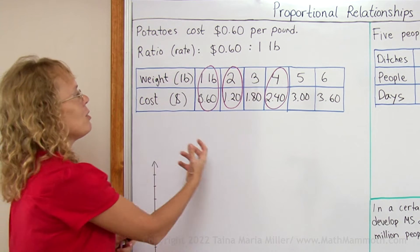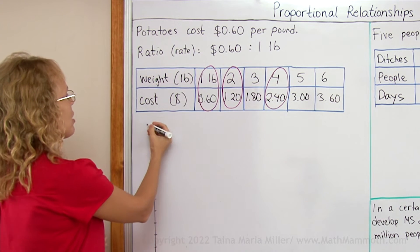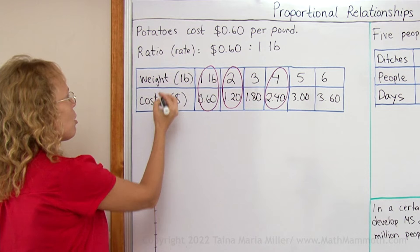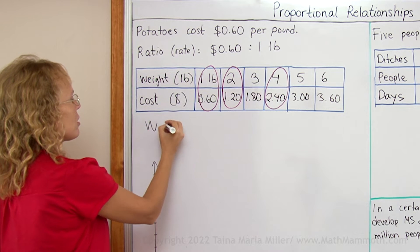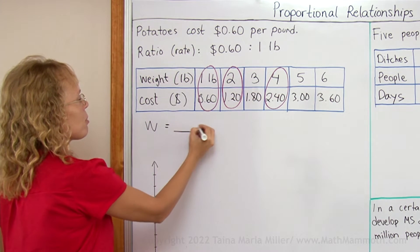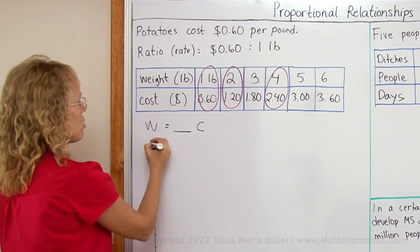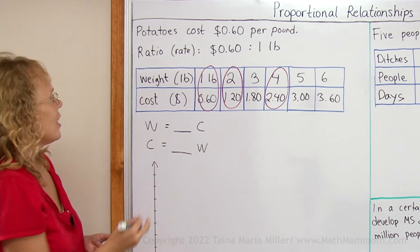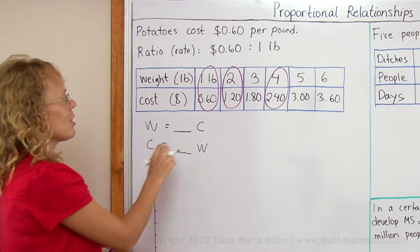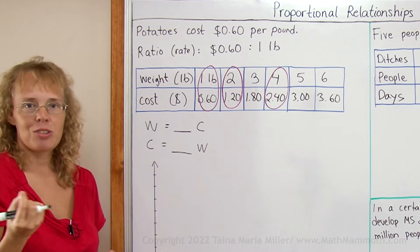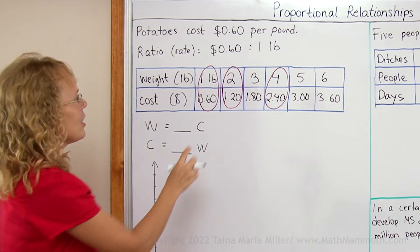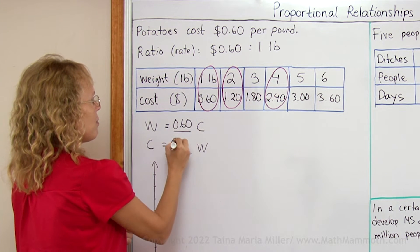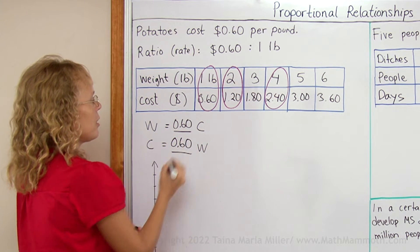Another thing we can do now is write an equation. The equation is: cost equals some number times weight, or weight equals some number times cost. The number that goes there is the unit rate — it's this 0.60.